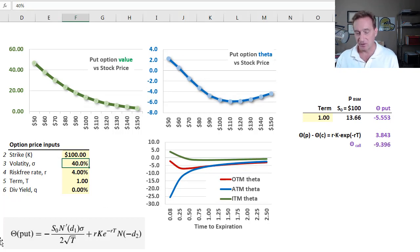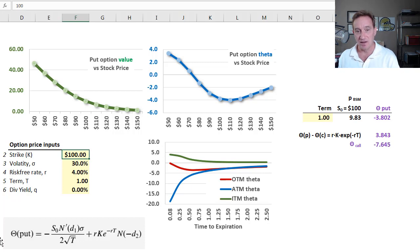So that is theta, the third first partial derivative that we looked at. Again, it's a sensitivity or change in the option value with respect to the passage of time, which is deterministic, perfectly predictable, also known as a measure of time decay. If you enjoyed this video, please subscribe to the channel and we'll see you on the next one. Thank you.